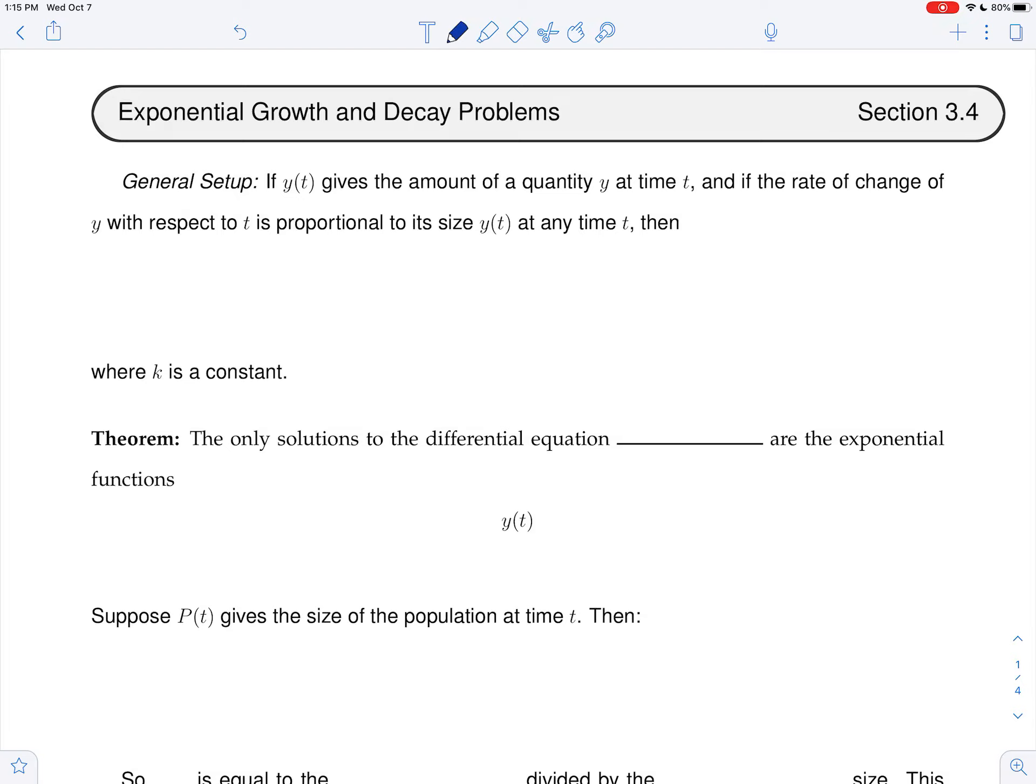So we're going to be working in a situation where y(t) gives the amount of a quantity y at any time t. And so you think of y as sort of changing. Maybe y(t) represents how many bacteria cells you have in a culture at any given time. And so it would typically be growing, or maybe decaying if you're killing it off.